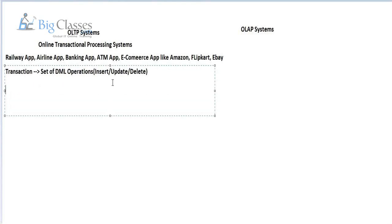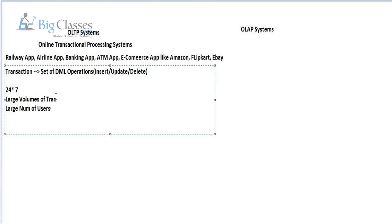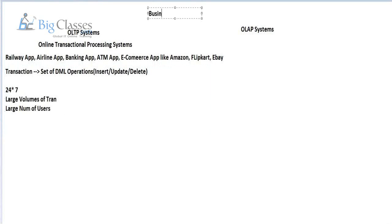OLTP systems have 24/7 access. You have a predefined access path, and large volumes of transactions are carried out by a large number of users. The main agenda for storing data in OLTP systems is for business operations, but the question is whether these systems are suitable for business analysis.